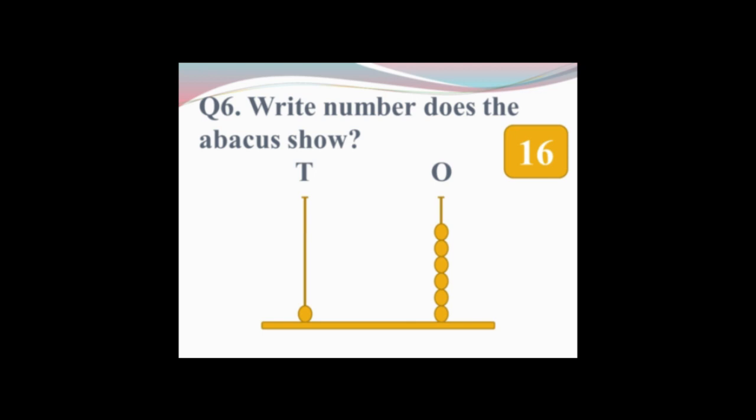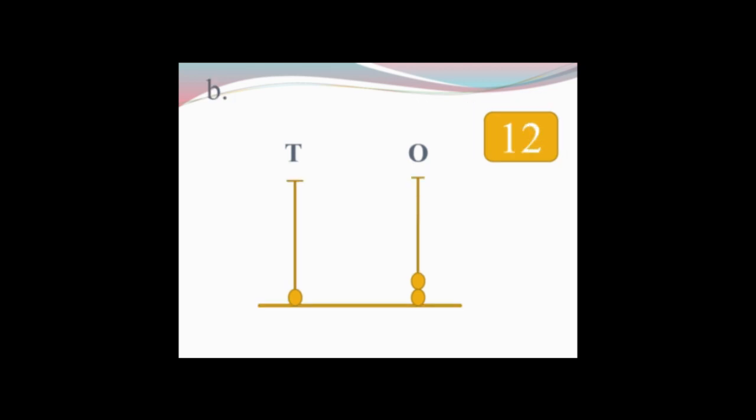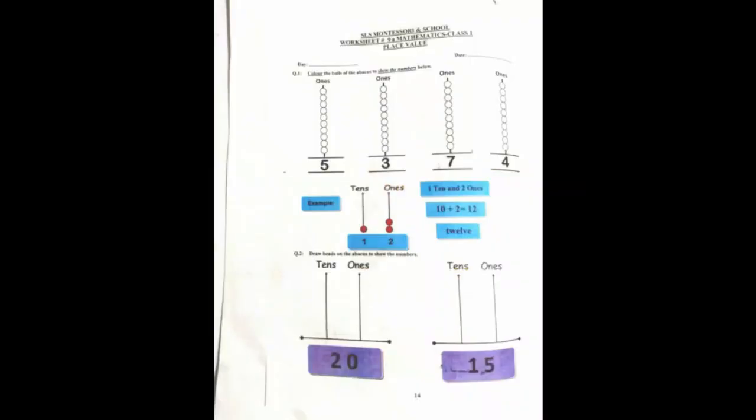Part B: look at the beads on the ones rod. How many beads are here? 1, 2. And how many are on the tens rod? 1. So 1 and 2 makes 12. Very good — 12. Now open your mathematics workbook, page number 14. We are going to do worksheet number 9A.